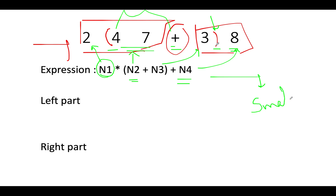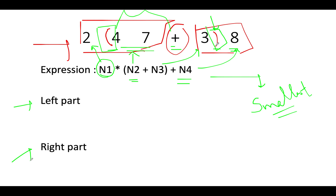It's a greedy kind of approach. We're interested in finding the value that is least in nature, and then we'll store the corresponding insertion points where we added the left and right parentheses for that smallest value. The problem boils down to identifying the values of N1, N2, N3, and N4 appropriately — it's all a game of pointers. We will go for the left part first, then the right part.